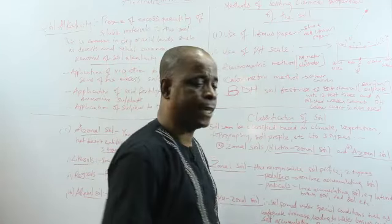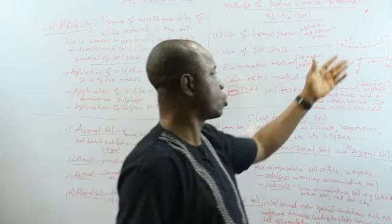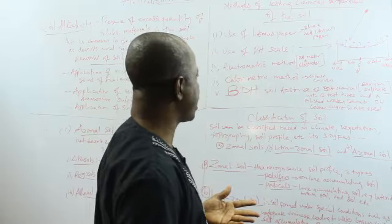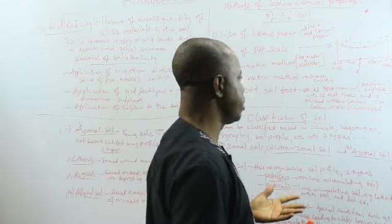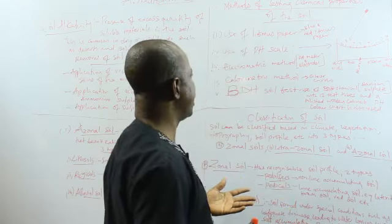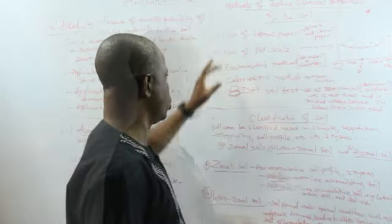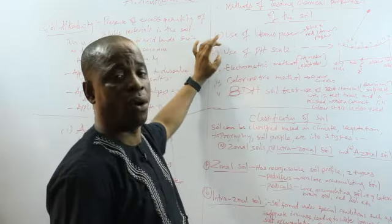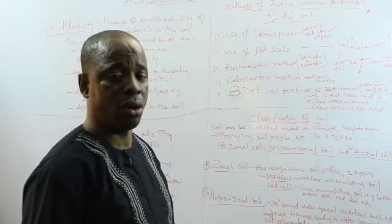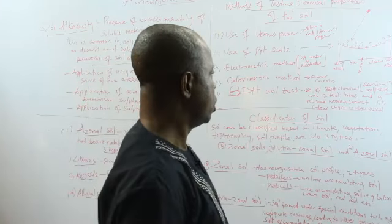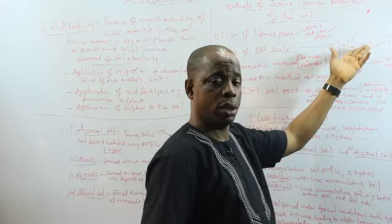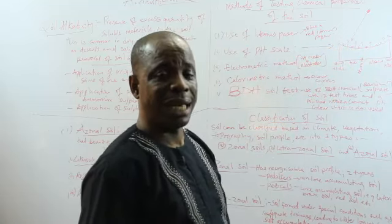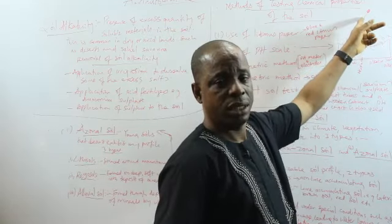Now, we can also use pH scale. A pH scale is what I've just drawn on the board. For pH scale, the soil is mixed up with water. And then you compare it on the scale. The use of pH scale - pH scale can be used to test and determine the level of alkalinity or acidity of the soil. For the pH scale, this is the diagram you have on the board. You mix the soil with water and you put the electrodes into the water. There, immediately, the pointer will deflect in the scale.